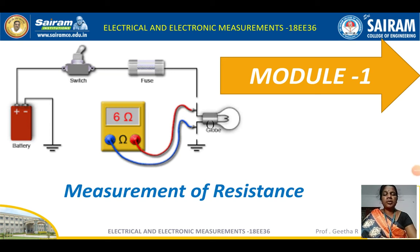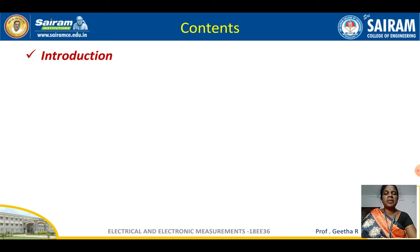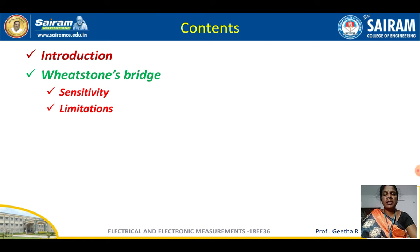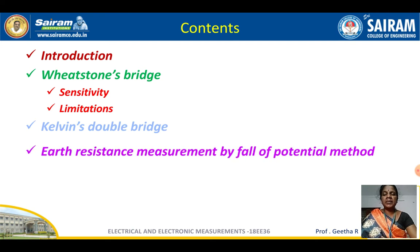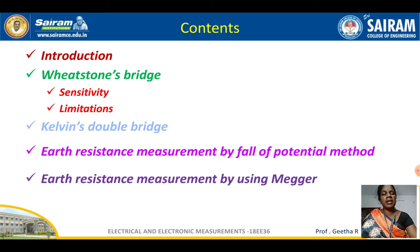Good morning students, welcome to the session on measurement of resistance under the subject Electrical and Electronic Measurements, subject code 18E36. Under Module 1, you have measurement of resistance, measurement of capacitance, and measurement of inductance. Under measurement of resistance, you have the Wheatstone bridge sensitivity and limitations, Kelvin's double bridge, earth resistance measurement by fall of potential method, and earth resistance measurement by using a megger.